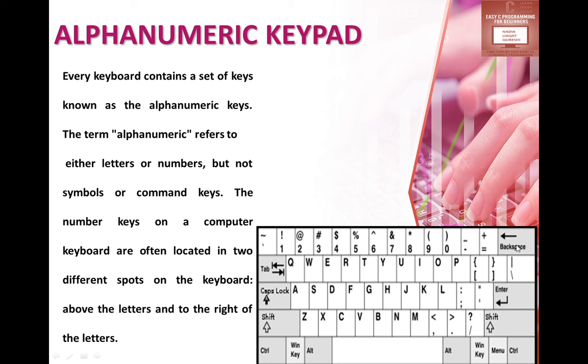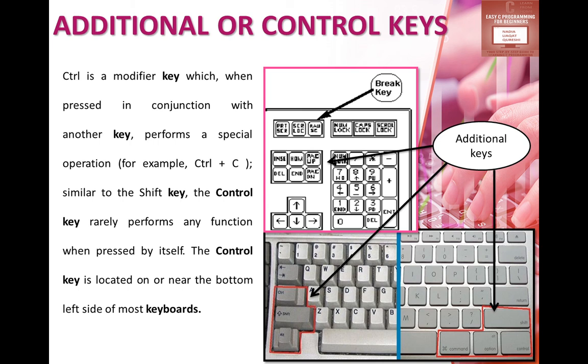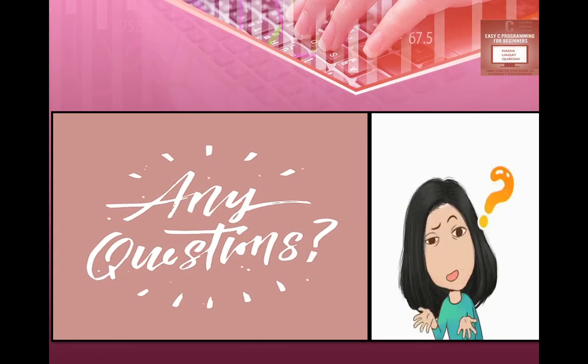Shift, alt and control I have told you that these are all combination and control keys. Additional and control keys. Control is the modifier which when pressed in conjunction with another key. Control key is very common. If you press ctrl plus C then the data will copy. Like other keys, if you press alt plus F4 then the file will close. With shift, if you press D.